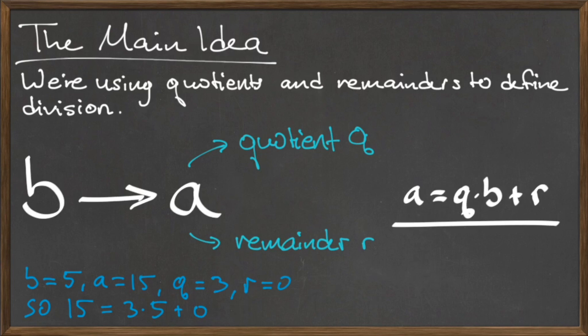Similarly, for the division of 11 by 4, we computed the quotient of 2 and a remainder of 3. Using our new definition for division, we can write 11 is equal to 2 times 4 plus 3.